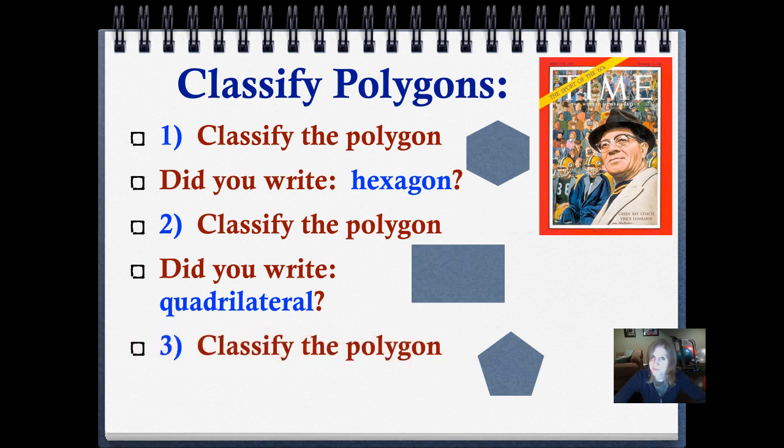One more. Classify the polygon. Push play when you're ready. Did you write pentagon? I always think the word pent rhymes with tent, and that shape there looks a little bit like a tent. You've got the two eaves of the roof, and then the walls, and then the floor. Not all pentagons look like that. They don't have to look like that to be a pentagon, or a hexagon, or a quadrilateral. They just have to have six sides, four sides, and five sides. Straight sides, of course.